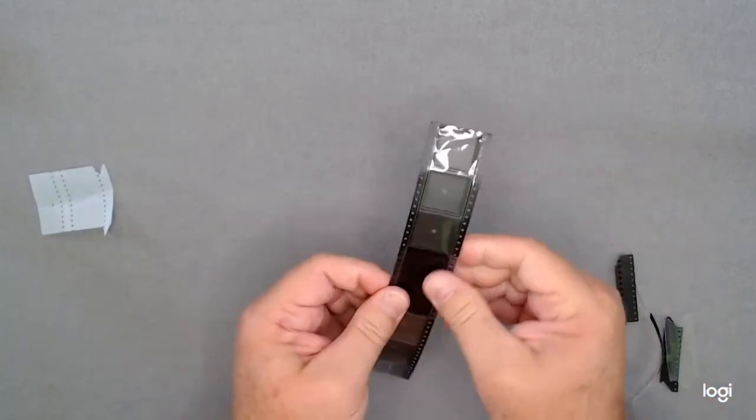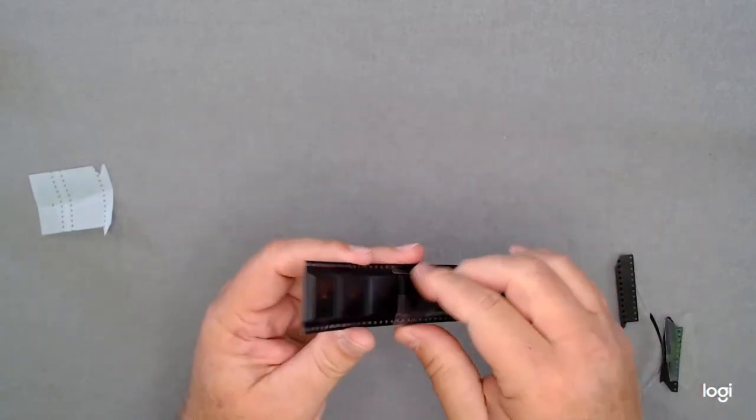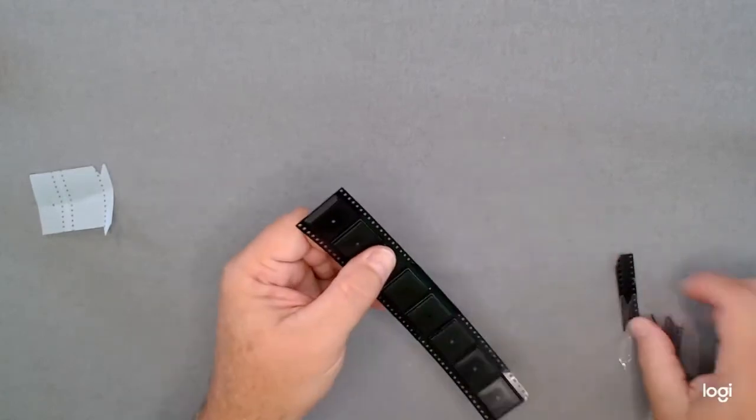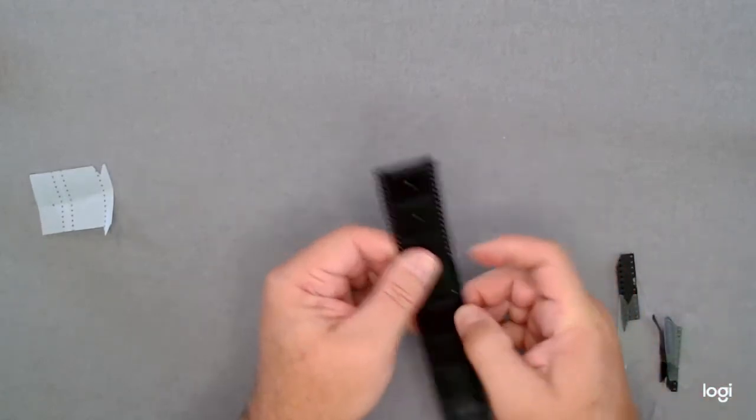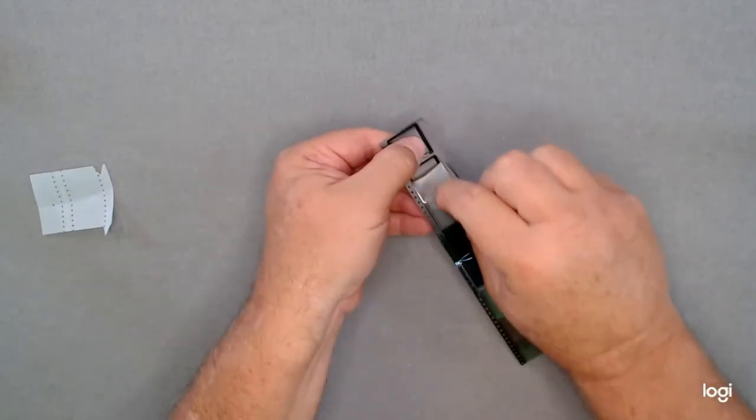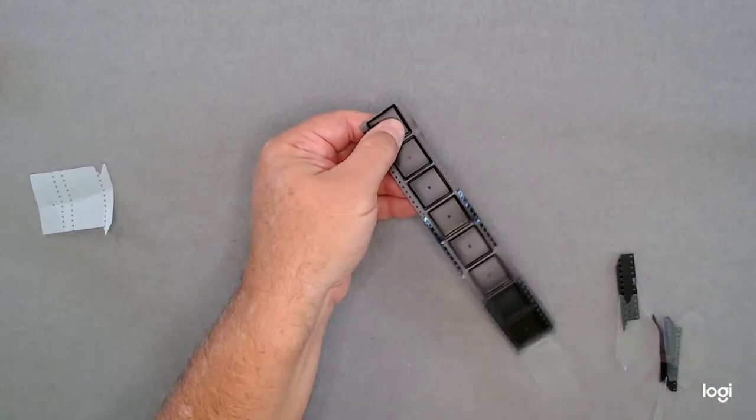Once you have all these aligned you pull the protective tape off. Make sure they're seated. Then when you pull your cover tape off it comes completely off both sides.